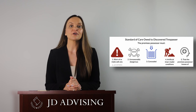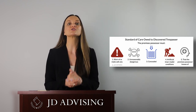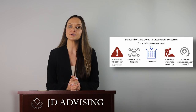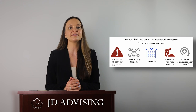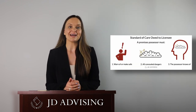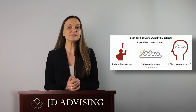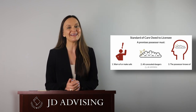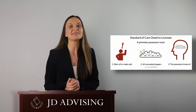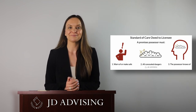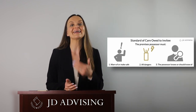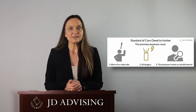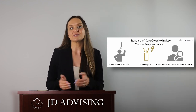Discovered trespassers are those plaintiffs that the premise possessor knows or should know of. The premise possessor must warn or make safe any unreasonably dangerous, concealed, artificial conditions that they know of. Licensees are social guests, like friends or family. The premise possessor owes the duty to warn or make safe all concealed dangers they know of, but there is no duty to inspect. Lastly, invitees are people invited on the land to confer an economic benefit or land that is open to the public. Here, the premise possessor must warn or make safe all dangers that they know or should know of, and there is a duty to inspect.